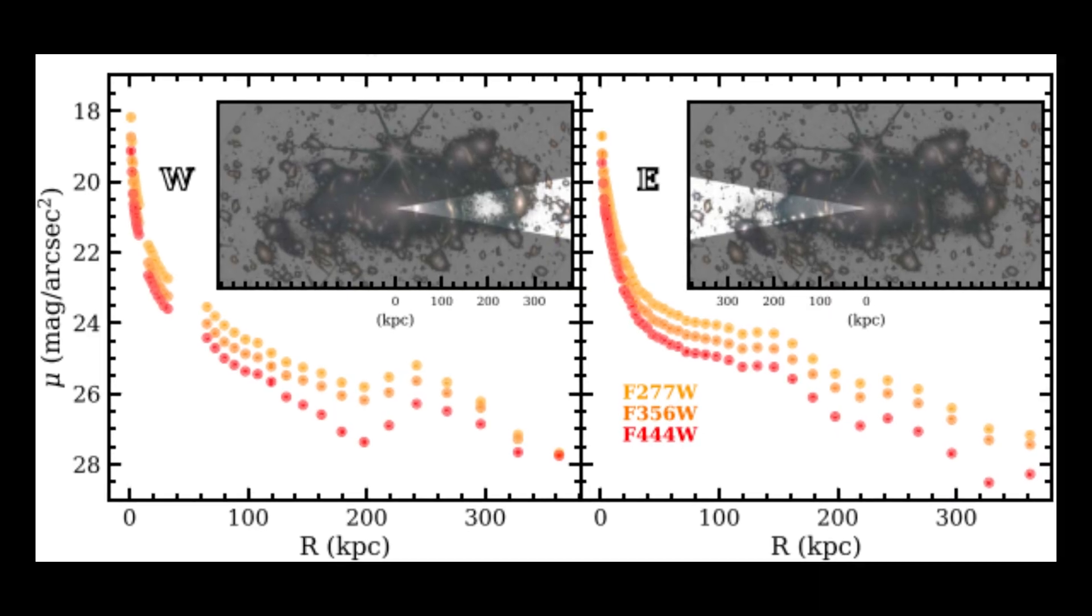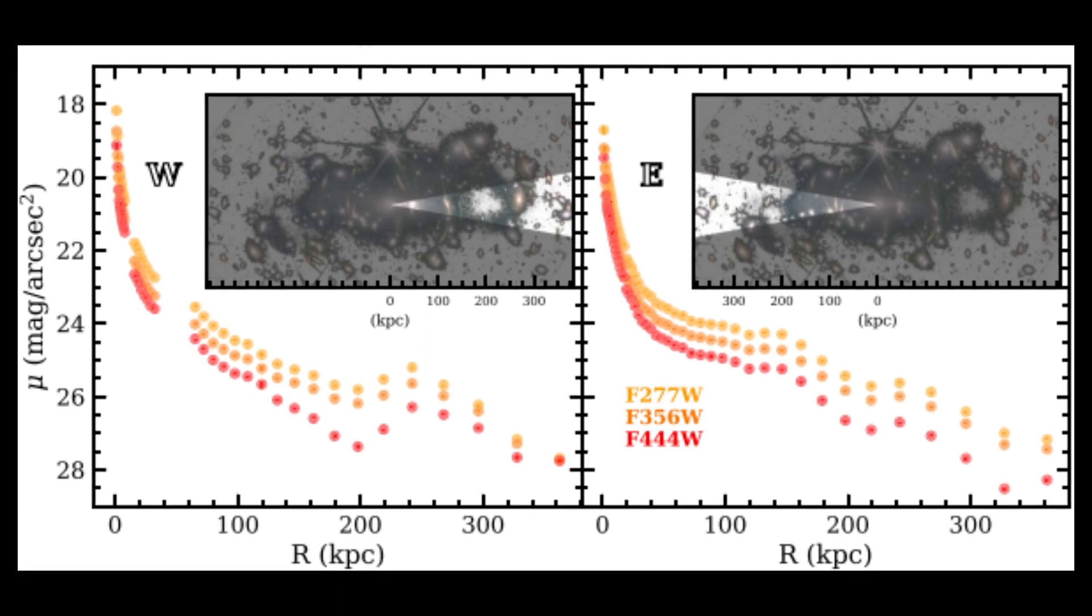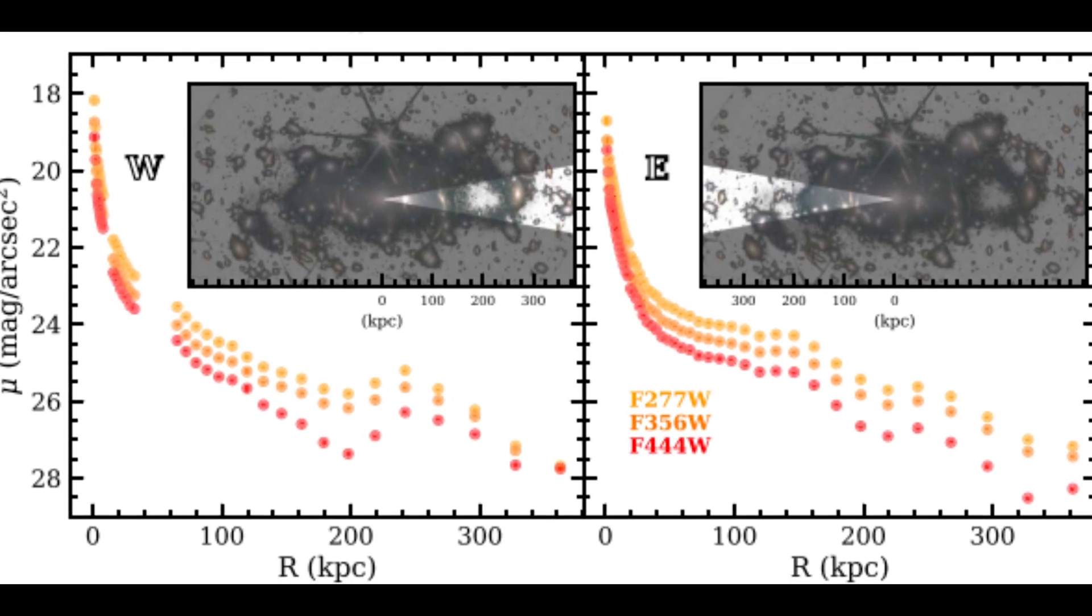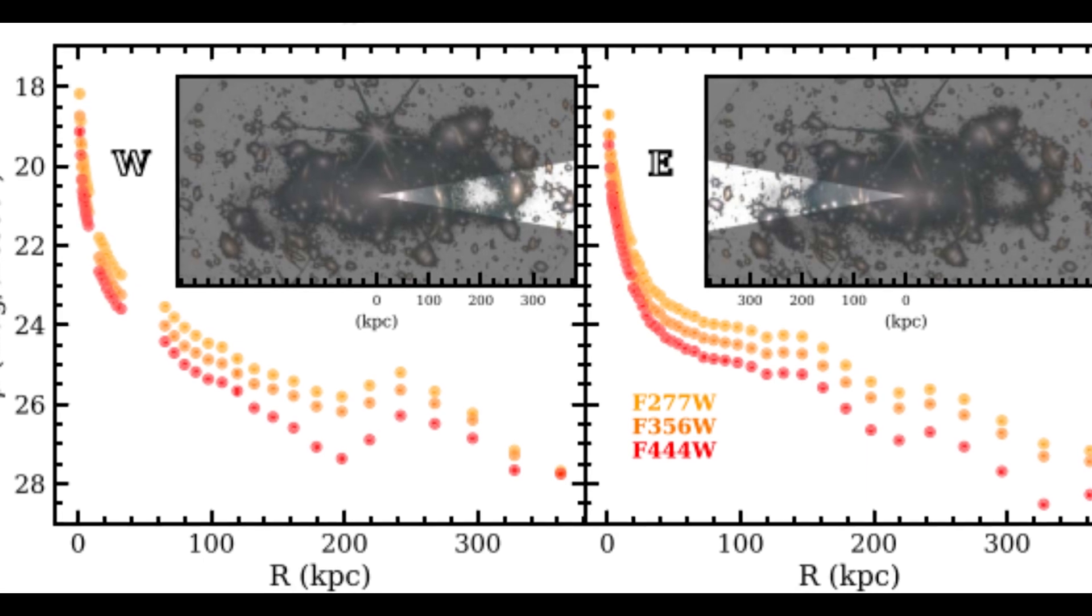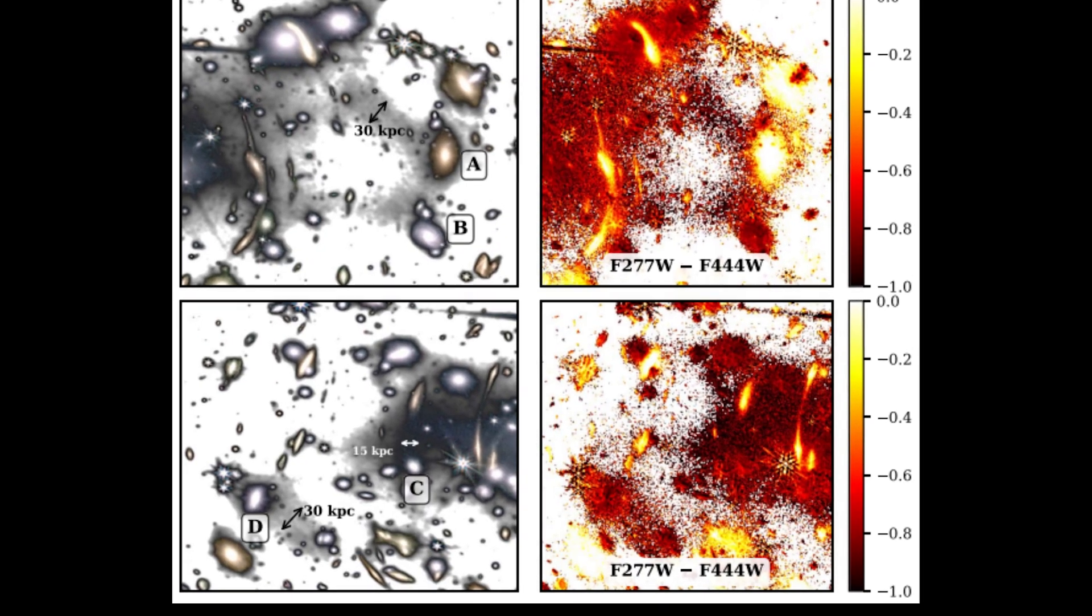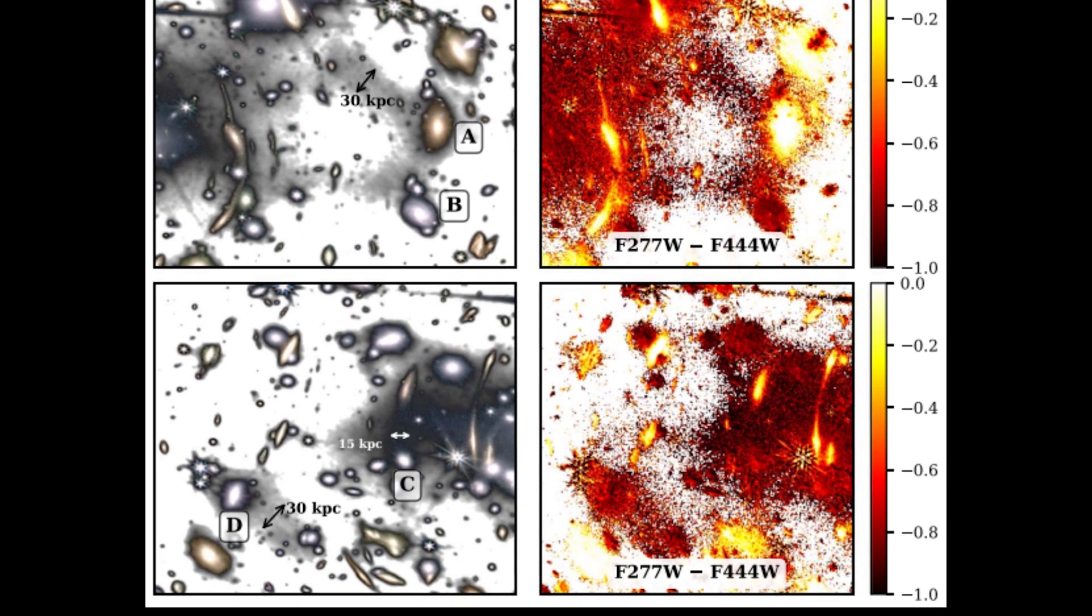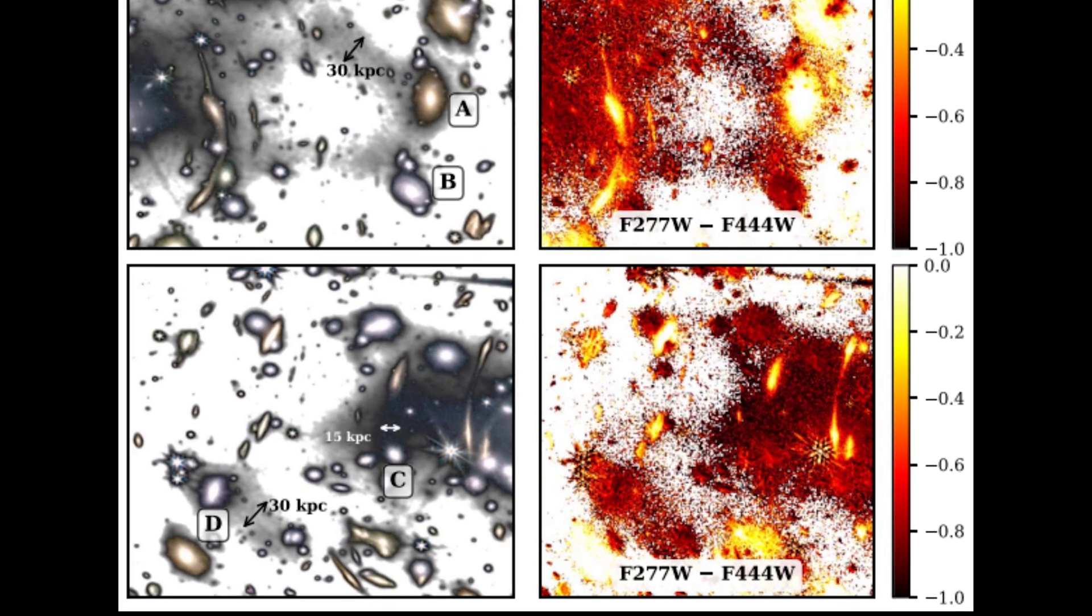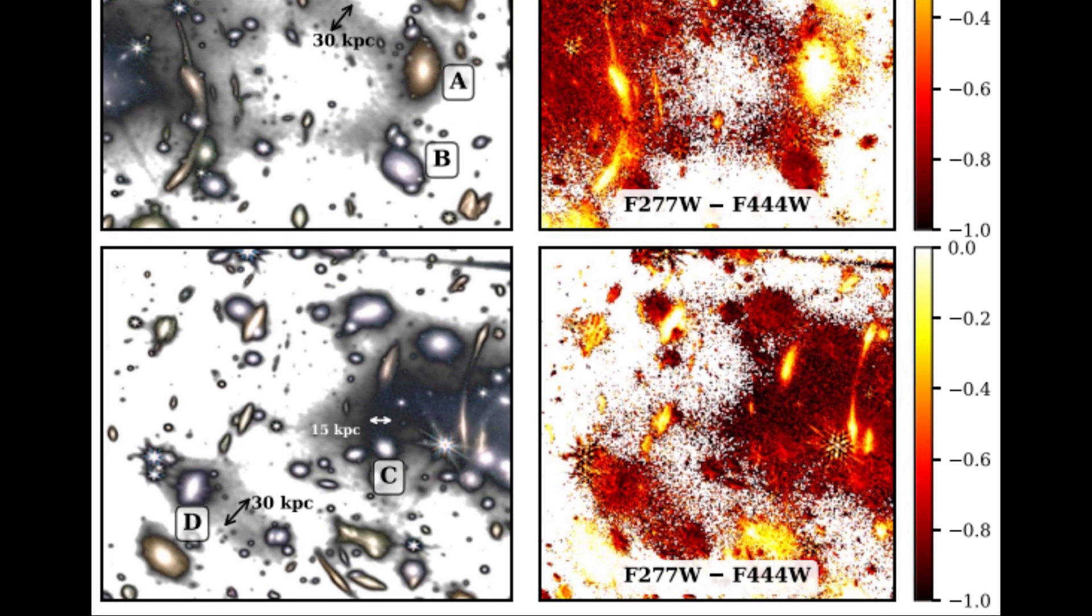In line with the previous study, the new study using Webb's data finds that the lost stars in the innermost regions probably came from a big merger. However, the researchers think that the wanderers in the outer regions are more likely to have come from gravitational interactions over a long period of time.